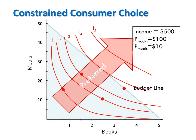Any bundle in the budget set — on the budget line or inside of it — is affordable to a consumer. At the same time, a consumer has preferences over two goods that can be described by an indifference map. Assuming preferences are monotonic, more is better, so the higher the consumer moves in this direction the higher their level of utility.